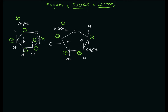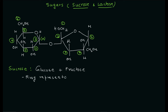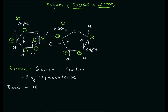The first carbon atom of glucose and the second carbon of fructose are bound together to form this disaccharide molecule, which is sucrose. So sucrose is a dimer of glucose and fructose. The bond between these two molecules is a C-O-C bond, which is basically the alpha 1-2 glycosidic linkage.